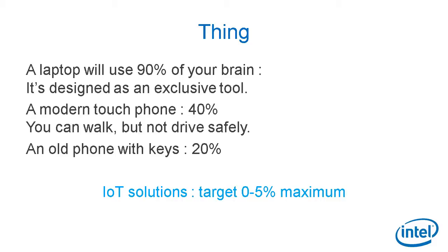It has to be a thing. It's hard for us software engineers to understand what a thing can be, because we use very complex tools like laptops all day. A laptop uses 90% of your brain — it's designed to be an exclusive, very productive tool. A modern touch phone uses perhaps 40% of your brain, so you can walk but not run, and you can't drive safely using one. An old Nokia with physical keys uses probably 20% of your brain — a lot easier to operate, but still not a thing. For IoT solutions, you need to target between 0% and 5% of brain utilization maximum.